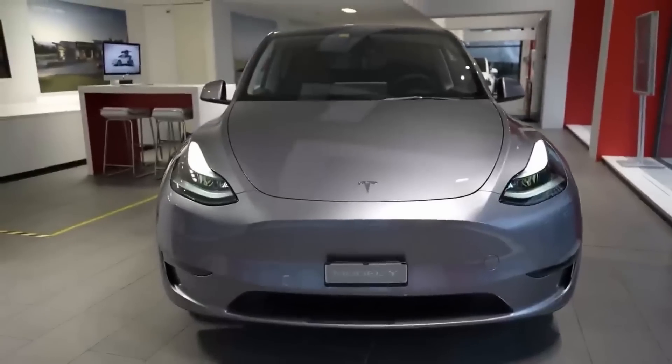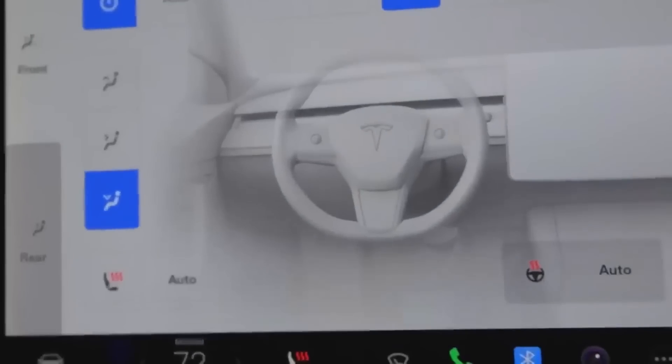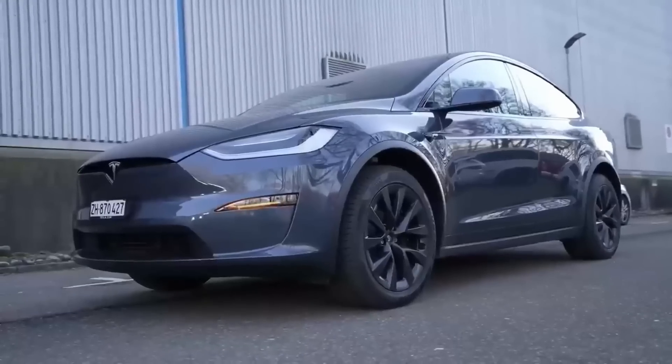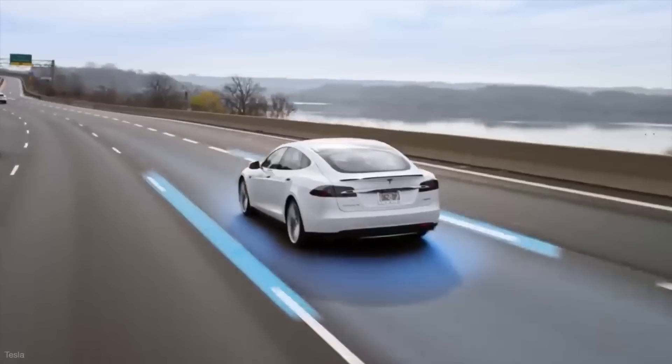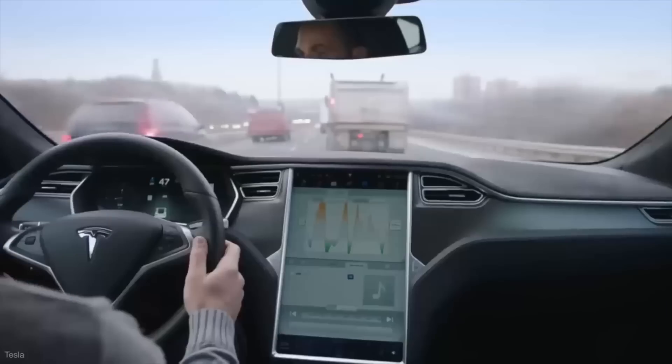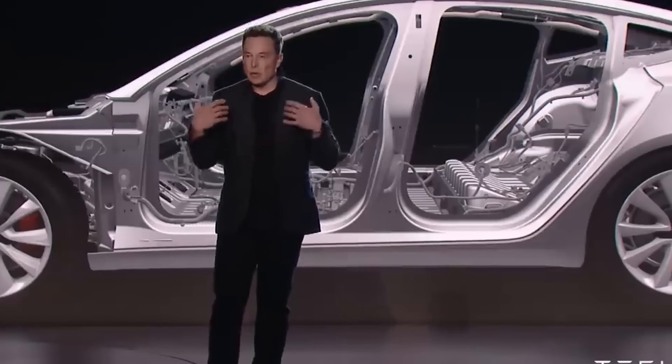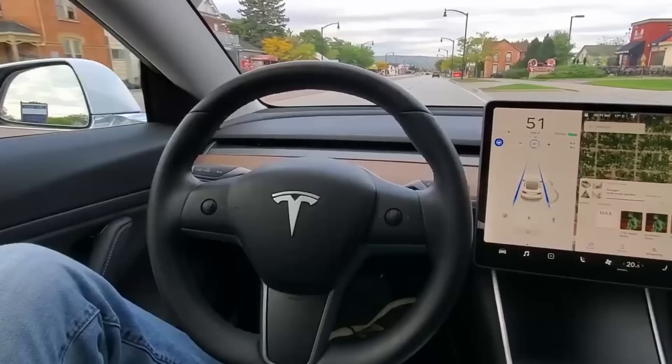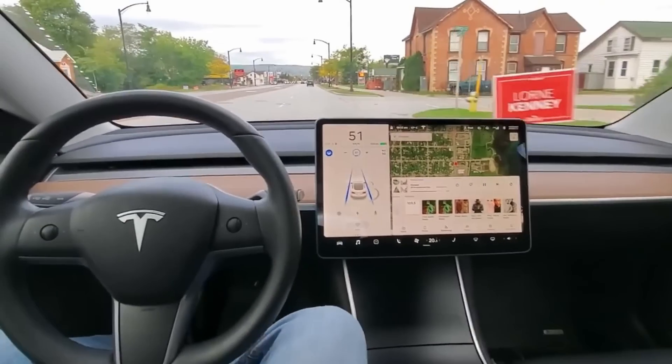Tesla introduced the hardware suite in September 2014 and further augmented its capabilities through progressive over-the-air software updates. This iterative approach culminated in a significant milestone with the Autopilot update in October 2015, accompanying the release of version 7.0 of Tesla OS. These updates continuously delivered increasingly advanced features to Tesla owners.